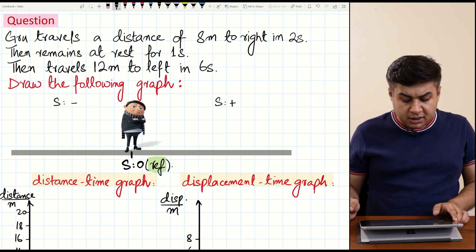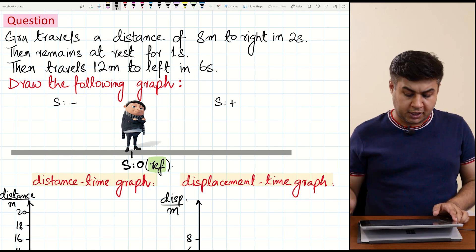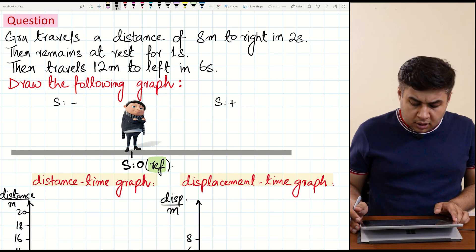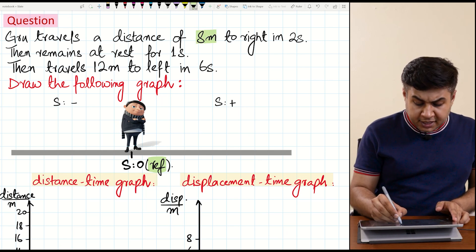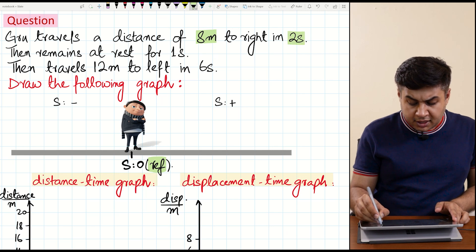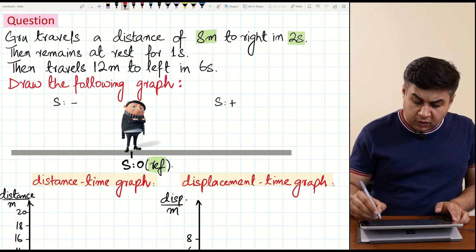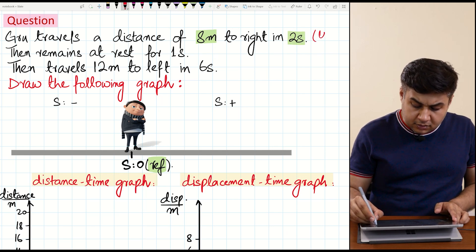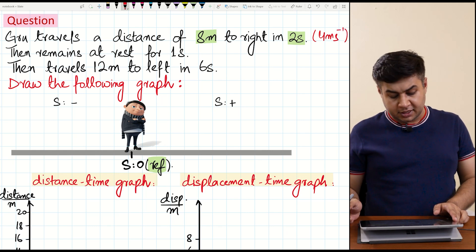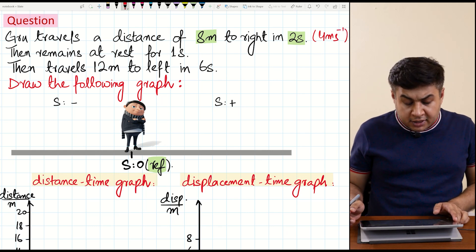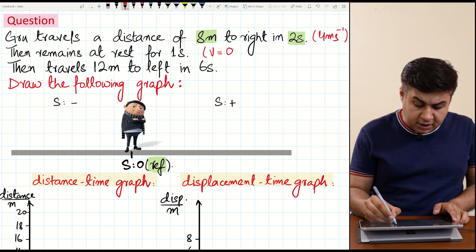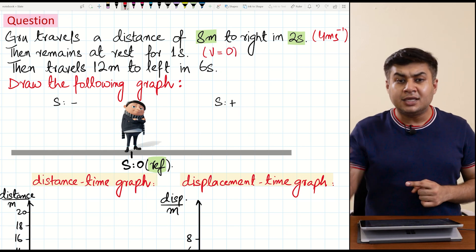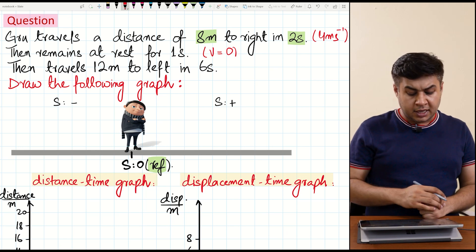Gru travels a distance of 8 meters in 2 seconds. Speed is distance divided by time. Distance is 8 meters and time is 2 seconds, so for the first part of the journey his speed is 8 divided by 2, that is 4 meters per second. Then he remains at rest for 1 second. At rest, his velocity is zero and distance will neither increase nor decrease.